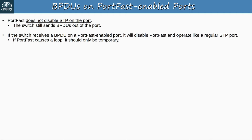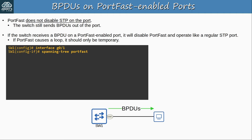Let's see what happens when a PortFast-enabled port receives a BPDU. PortFast is configured on SW1's G0/1 port connected to a PC. SW1 G0/1 still sends BPDUs even though PortFast is configured — it has sent 19 BPDUs but received 0, as expected since it's connected to a PC. Using 'show spanning-tree interface G0/1 portfast' confirms that PortFast is enabled, confirming that PortFast-enabled ports still send BPDUs.